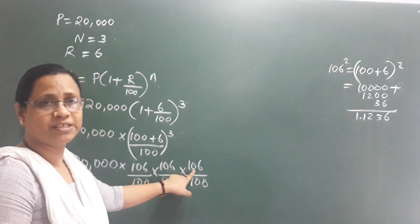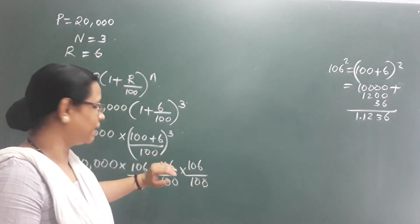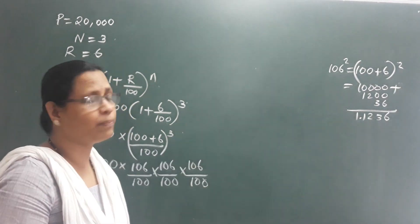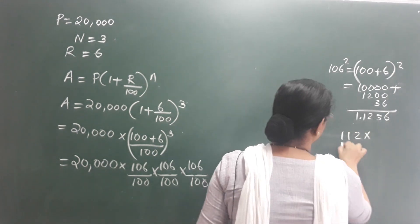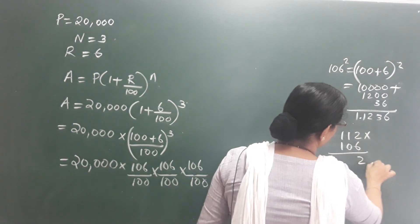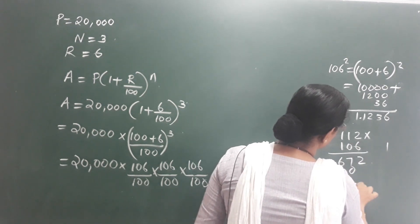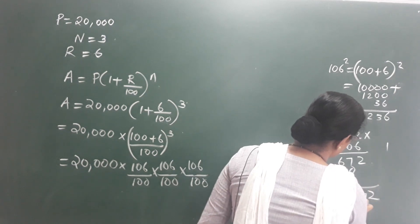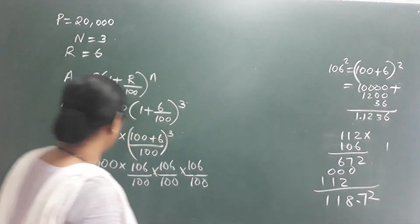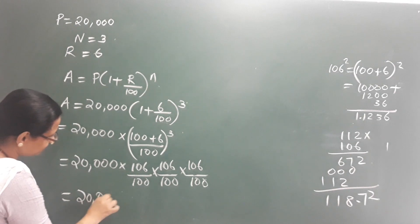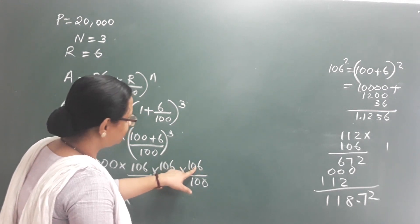Since multiplying three numbers gives a large result, it's easier to keep two decimal places. We multiply 1.06 raised to 3. After working out the multiplication, we get approximately 1.19. So we calculate 20,000 into 1.19.